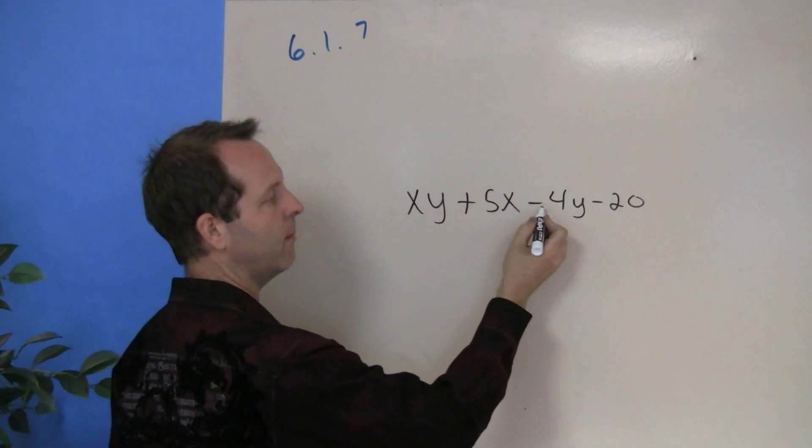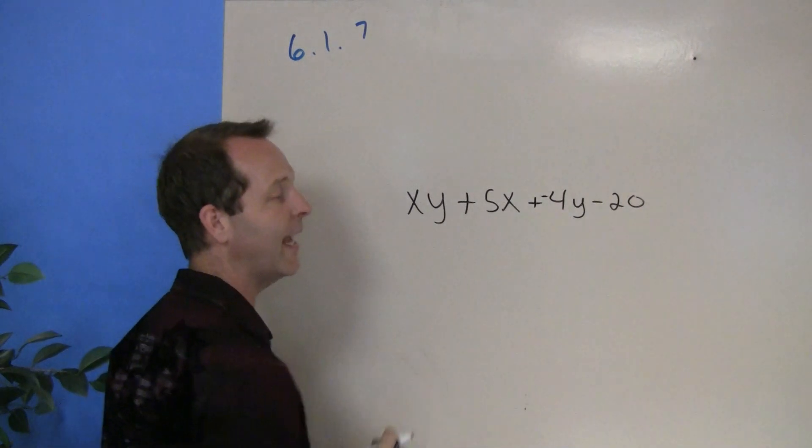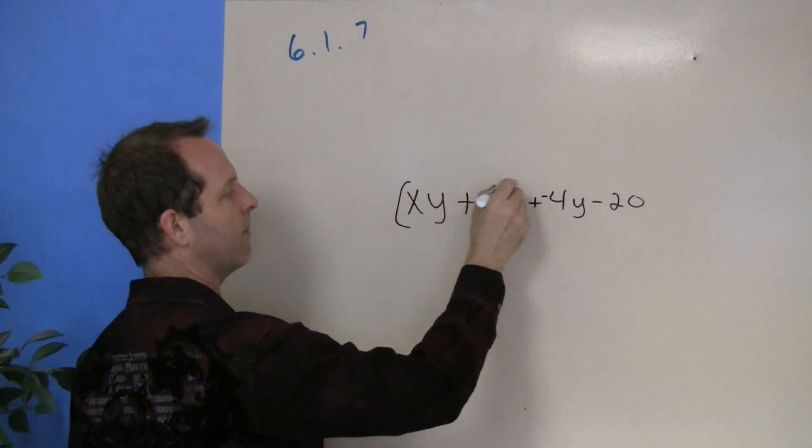So what I'm going to do then is remember subtracting a positive 4y is the same thing as adding a negative 4y. So if I'm doing that then I'll look at both of these two terms.